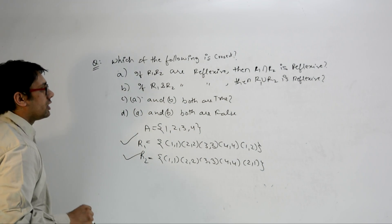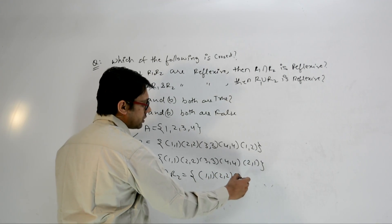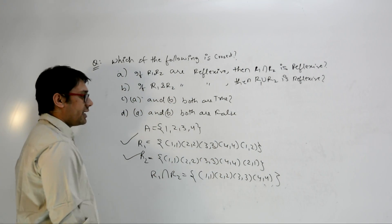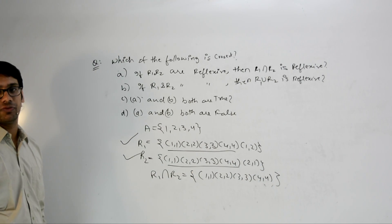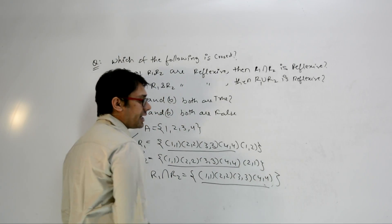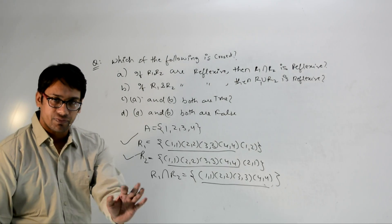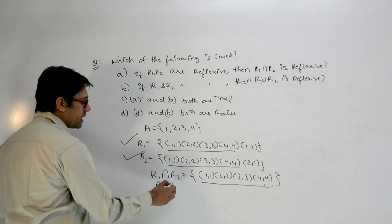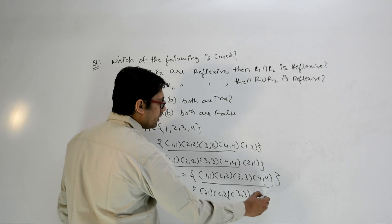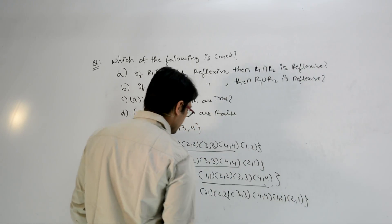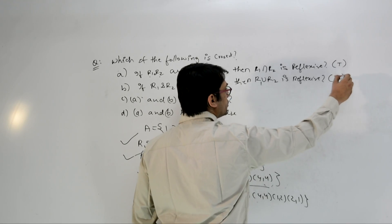R1 is reflexive and R2 is reflexive. Taking R1 intersection R2, we get (1,1),(2,2),(3,3),(4,4) — the diagonal elements — because if R1 has to be reflexive it must contain all diagonal elements, and the same for R2, so their intersection must also contain all diagonal elements. Therefore R1 intersection R2 is always reflexive. Similarly, R1 union R2 = {(1,1),(2,2),(3,3),(4,4),(1,2),(2,1)}, which is also reflexive. So both statements are true.